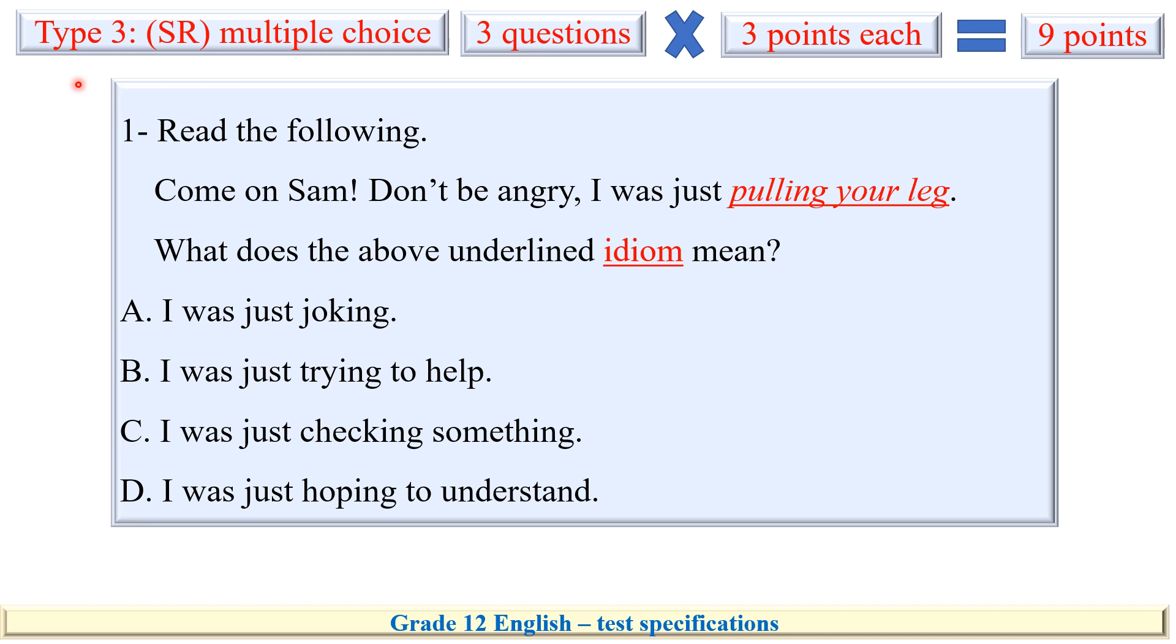We've talked about filling the gaps and word formation. The third and last type of vocabulary questions is multiple choice questions. We'll be given three questions, three points each. One type of them can be like this about an idiom. Stop here, take your time to read. And what's the meaning of pulling one's leg? I think you've got it right, it's joking.